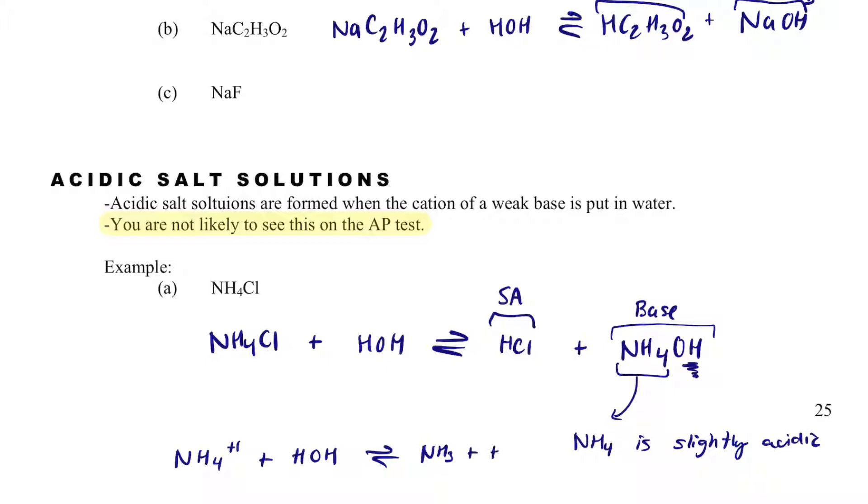and so what ammonium will do is ammonium will actually dissociate and react with HOH and give us NH3 plus H3O⁺, and so this ammonium, not only does this react and give us HCl, which is a strong acid, but then the ammonium goes and reacts and gives us H3O⁺, so even though we do have a hydroxide, and that is a base, we're overwhelmed by the amount of acid, and so that makes it slightly acidic.